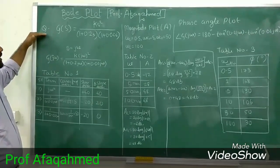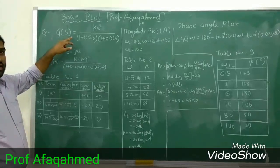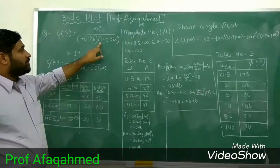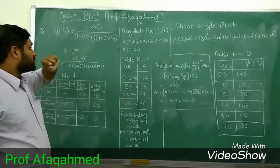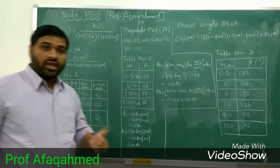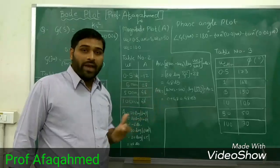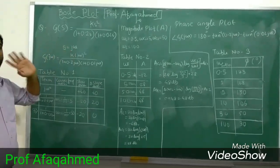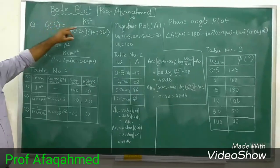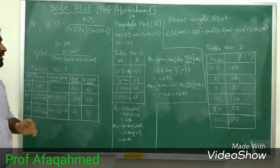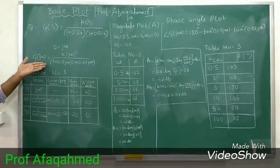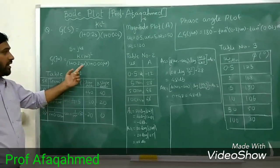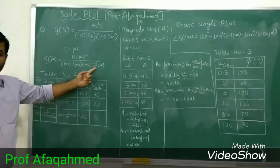The problem is given: G(s) = ks² / [(1 + 0.2s)(1 + 0.02s)]. Now what we have to do — the first step is to replace all the s terms by jω. So here I am replacing the s term with jω, and the transfer function will become G(jω) = k(jω)² / [(1 + 0.2jω)(1 + 0.02jω)].